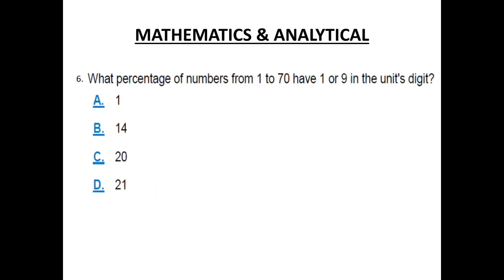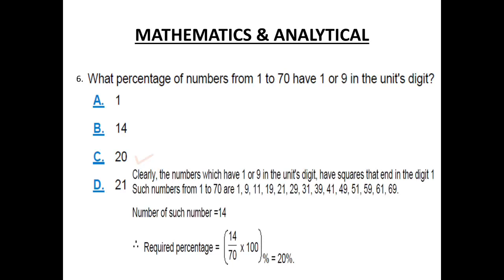Number 6. What percentage of numbers from 1 to 70 have 1 or 9 in the unit's digit? The answer is C, 20%. Clearly the numbers which have 1 or 9 in the unit's digit have squares that end in the digit 1. Number of such numbers is equal to 14. Required percentage is equal to 14 divided by 70 multiply by 100. We get 20% as the answer.